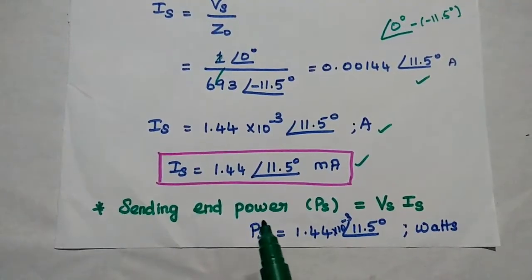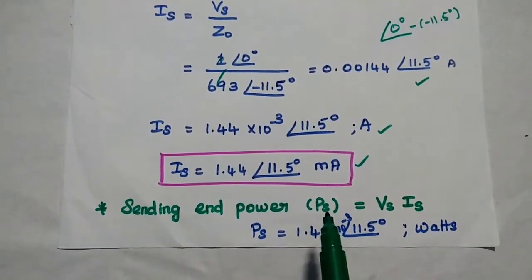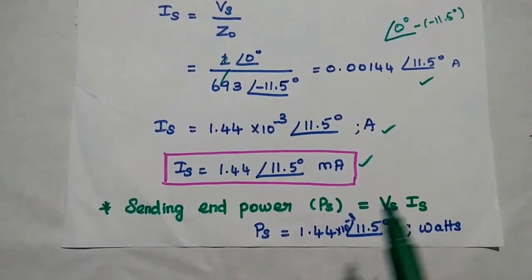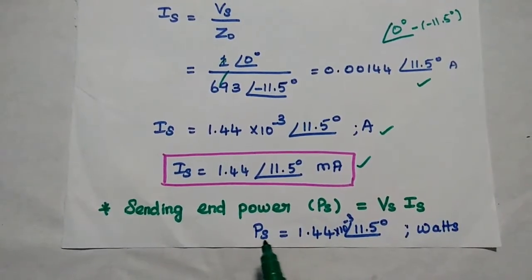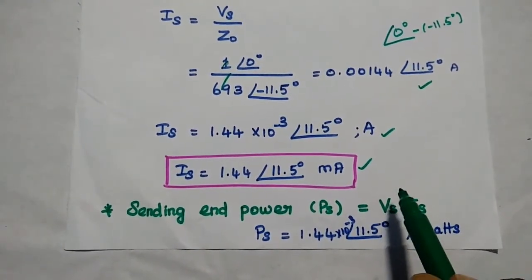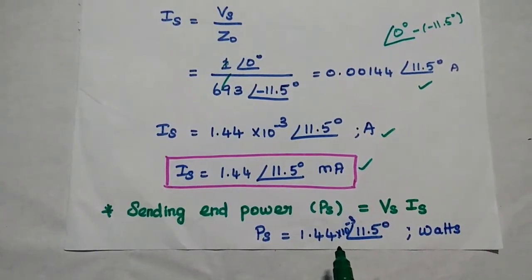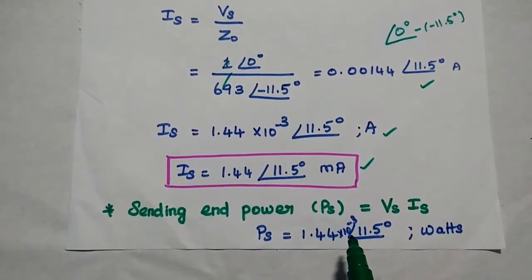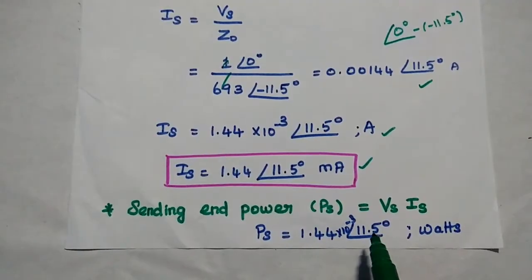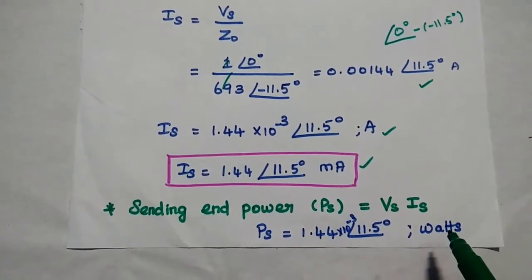Next, the sending end power PS equals VS multiplied by IS. PS equals 1 × 1.44 × 10⁻³ at angle 11.5 degrees, which equals 1.44 × 10⁻³ watts at angle 11.5 degrees.